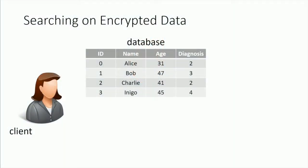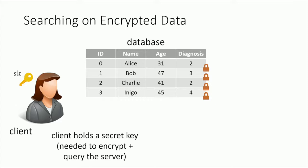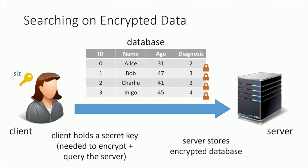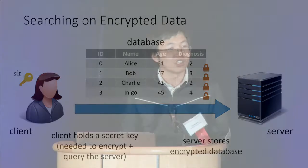Abstractly speaking, we can model this as a two-party problem where we have a client who has some database. What the client would like to do is take this database and encrypt it in some way — here we look at a secret key version, so the client possesses a secret key. What's stored on a database server is just the encryption of all the contents of the database. When a client wants to search, it needs to use the secret key in conjunction with some cryptographic protocol. The question then becomes: how do we define security for this setting?